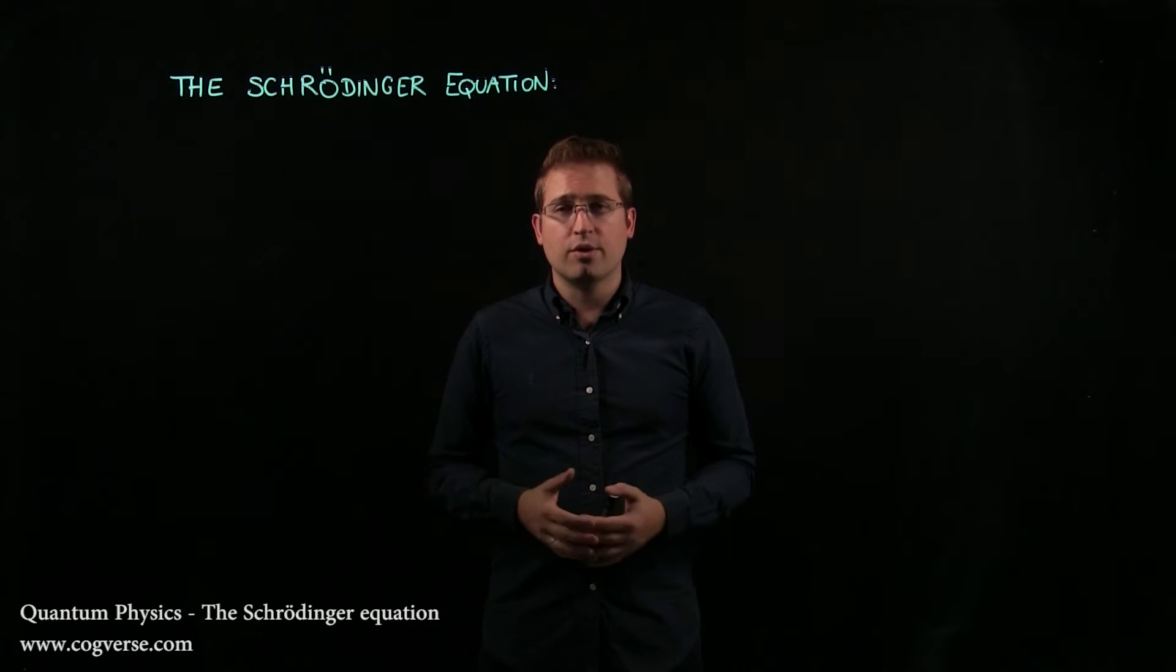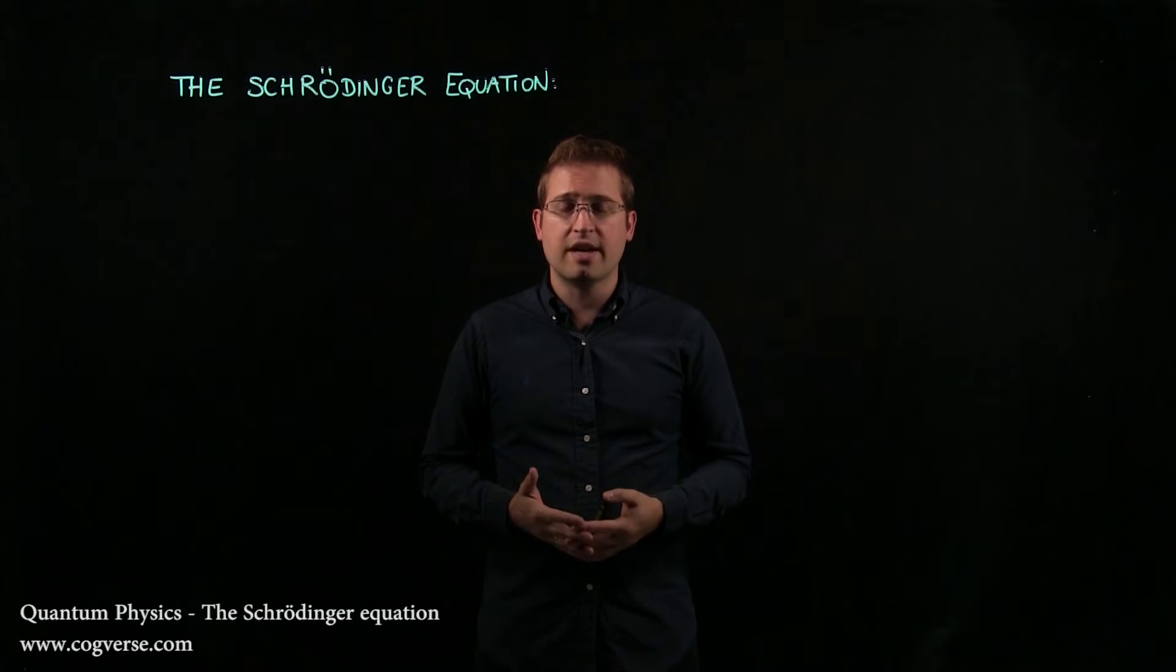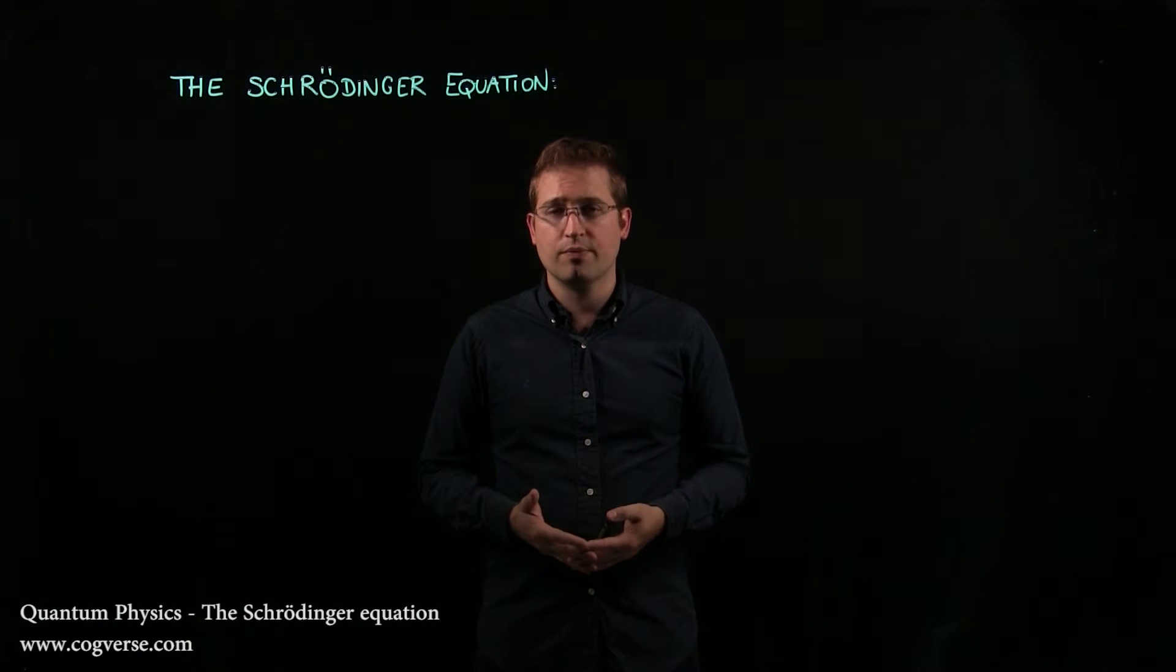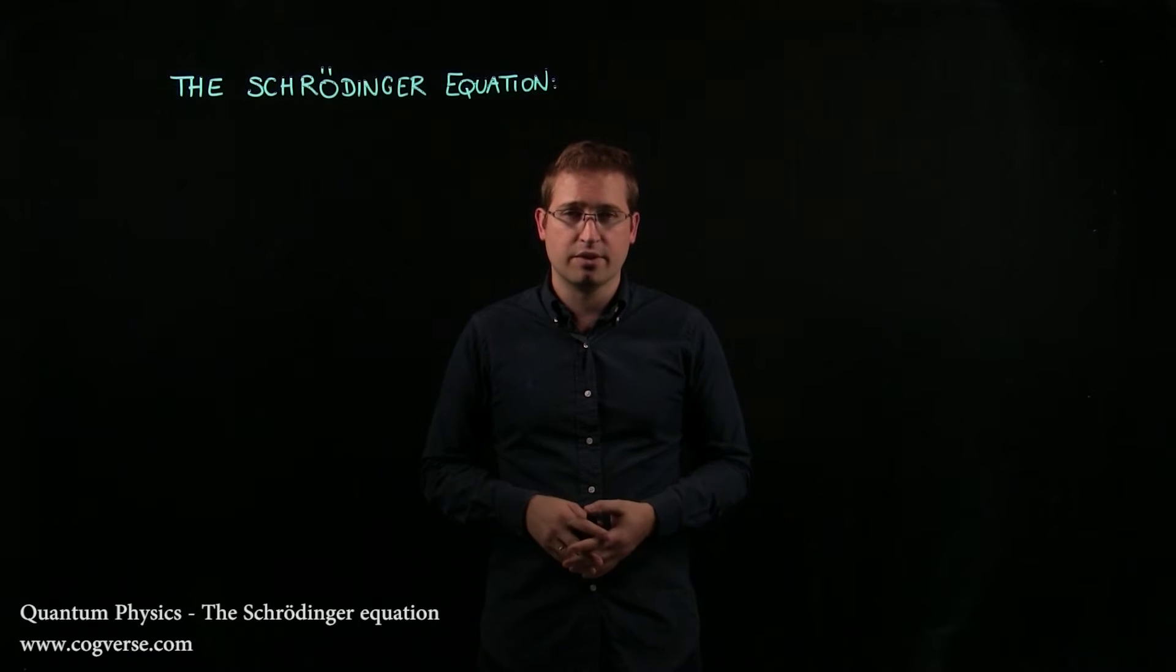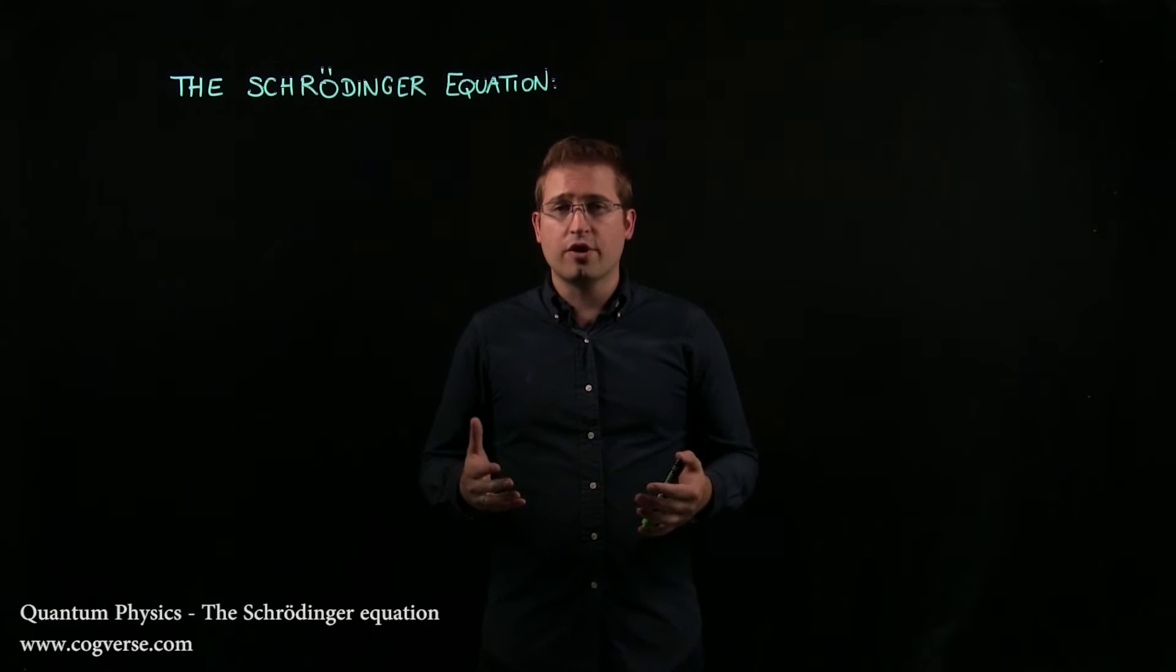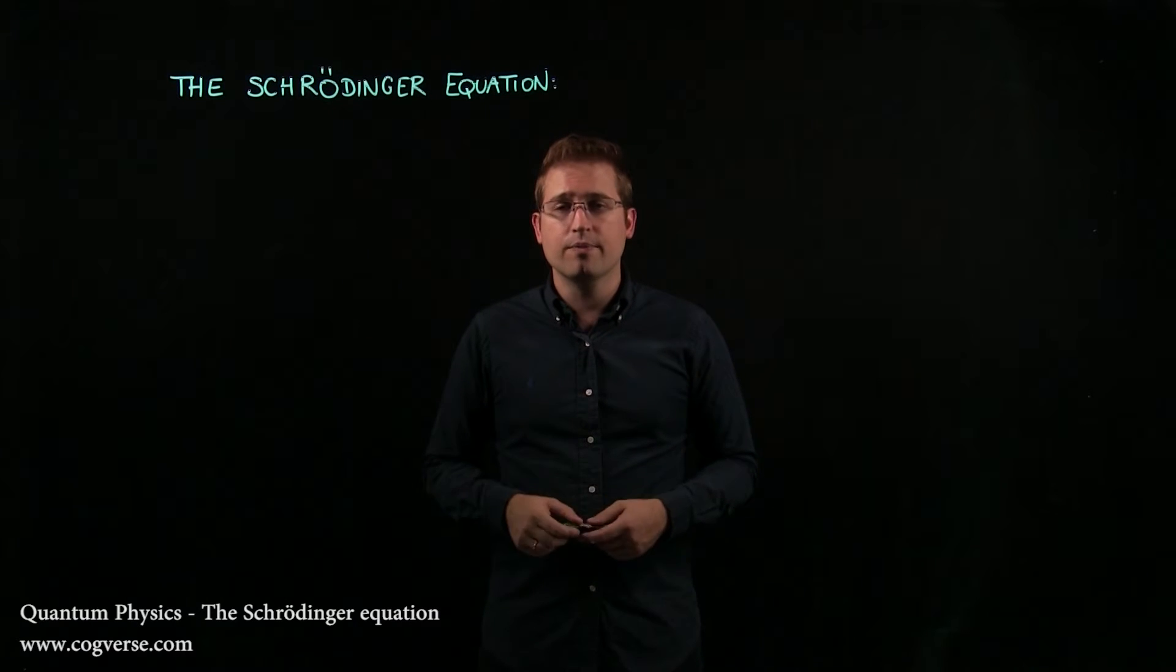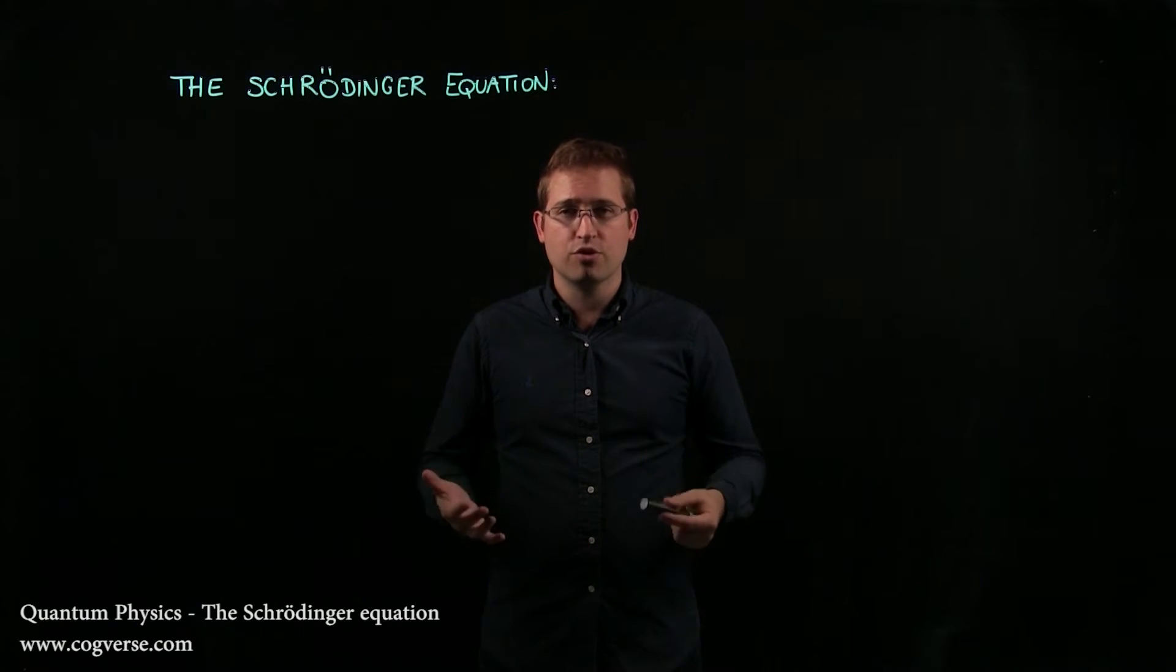And what we're going to do now, in order to account for the wave-like behavior of matter, is use functions that are called wave functions, and that provide the best possible description of the quantum state of a physical system. Now, these wave functions just don't come out of thin air. They're actually solutions to the Schrödinger equation.